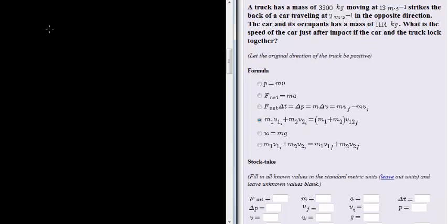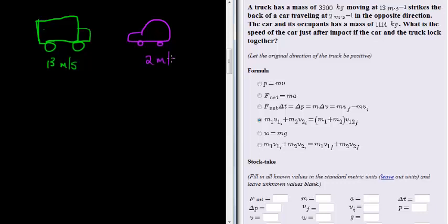So again, we have this scenario where we have two things locking together. We have a truck and it's racing down the road at 13 meters per second, and we have a car coming in the opposite direction. And this car is traveling at 2 meters per second.